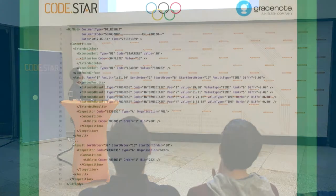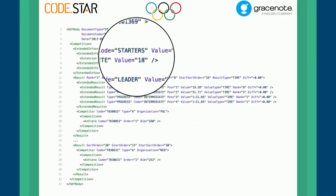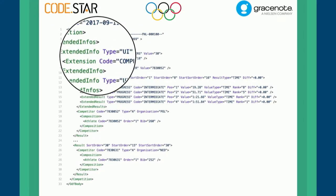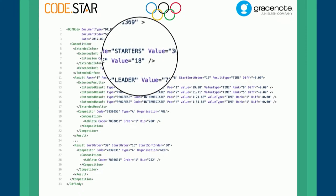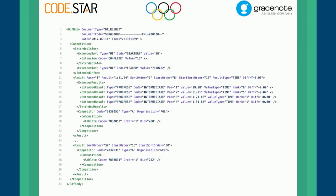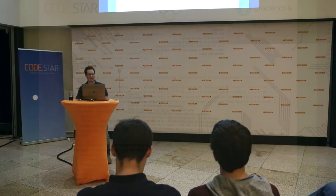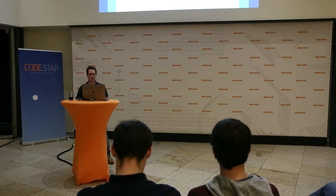One other example is this DT result file for SSK — speed skating. We see this extended infos part, which shows starters 30 and complete 18. I earlier showed that progress bar — we built that using that piece of information. But much more than that, this also shows for every athlete the results, including intermediate ones, and maybe some additional information. I've seen for figure skating it even contains information about what kind of triple gainer somebody did. It's just very rich data. But you get these XML files with data — that doesn't necessarily mean that you already have good widgets. You need to combine these things before you get there. That's where most of our work was involved.